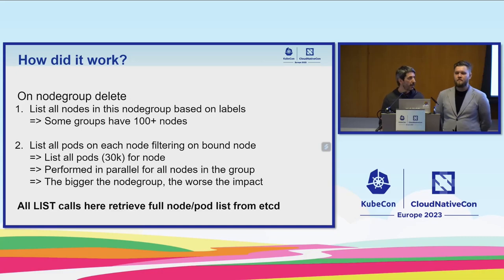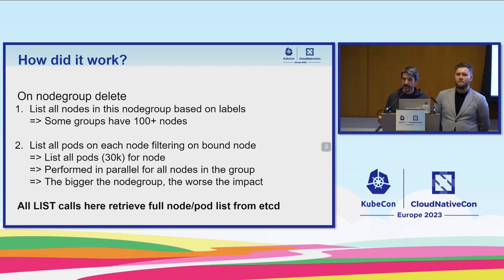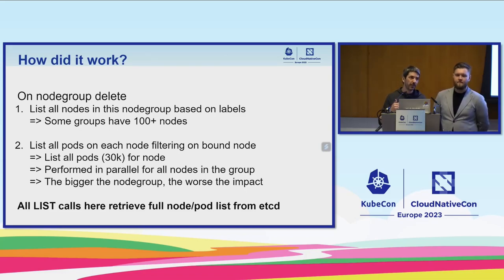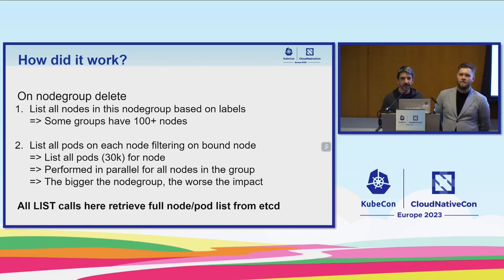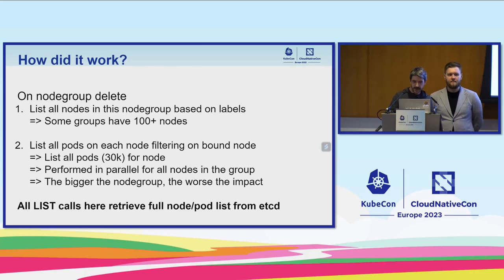The implementation was a very naive approach. When a node group is deleted, first you list all the nodes for the node group based on labels — some node groups had dozens or even hundreds of nodes. Then, to check if there were pods running on those nodes that were not daemon sets, we did a list of all pods on each node using a field filter for 'node X.' But remember how filtering works in etcd — this means getting all data from etcd and then filtering for node X. So even if you have five pods on a given node, you still retrieve 30,000 pods from etcd. And because we were efficient, we did this in parallel for all nodes, meaning hundreds of concurrent list-pods calls to etcd, each retrieving 30,000 pods.